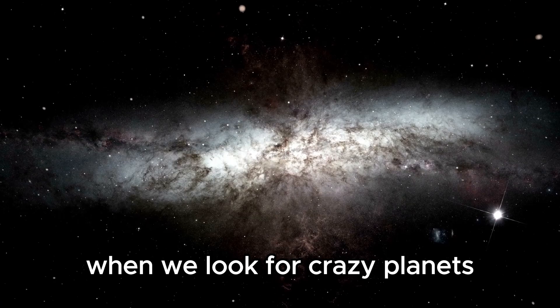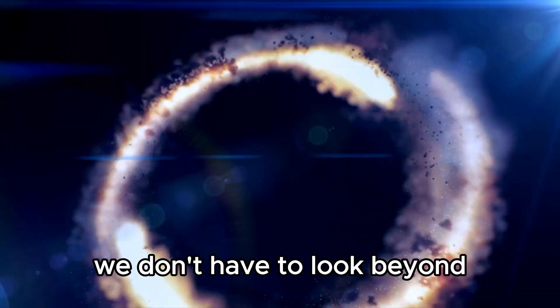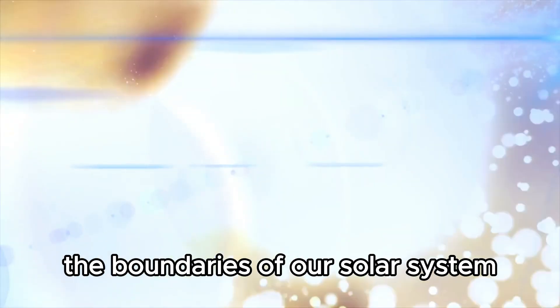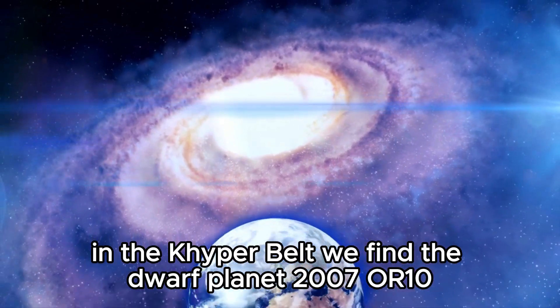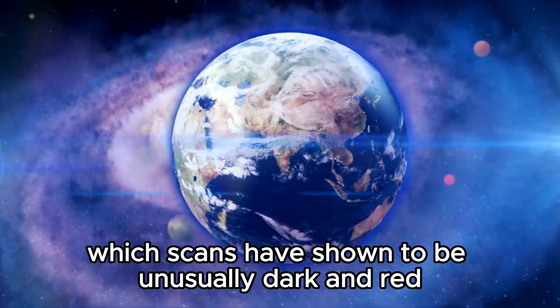When we look for crazy planets, we don't have to look beyond the boundaries of our solar system. In the Kuiper belt, we find the dwarf planet 2007 OR10, which scans have shown to be unusually dark and red.